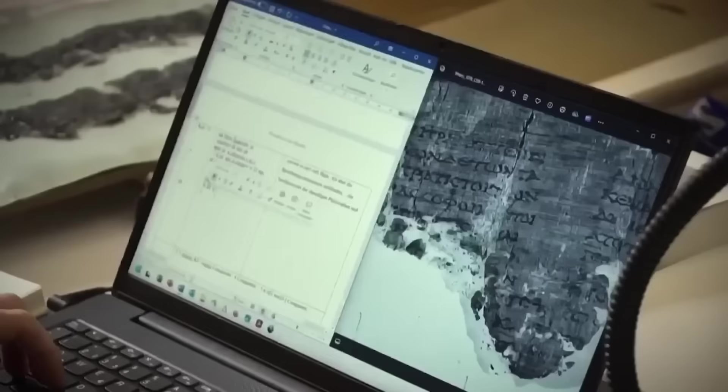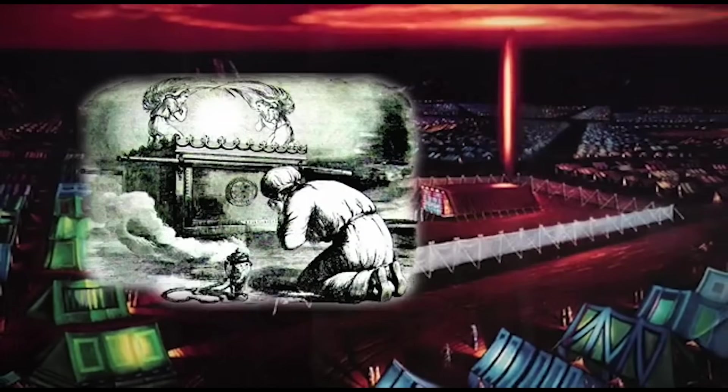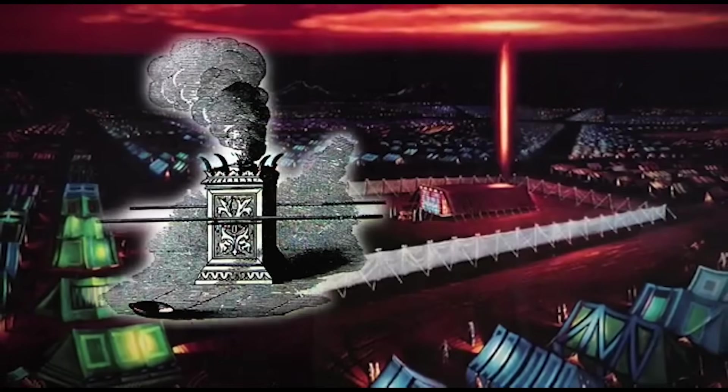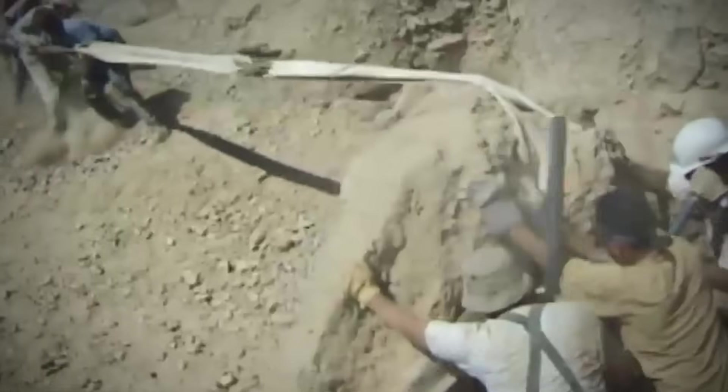That's nearly 2,000 years after the Copper Scroll was created. If this interpretation is correct, it shatters our understanding of ancient knowledge. It suggests people in the first century encountered energy sources we thought impossible for their time. The implications are both thrilling and unsettling. What exactly did these ancient scribes witness? And how could they possibly describe a technology that wouldn't exist for another two millennia?